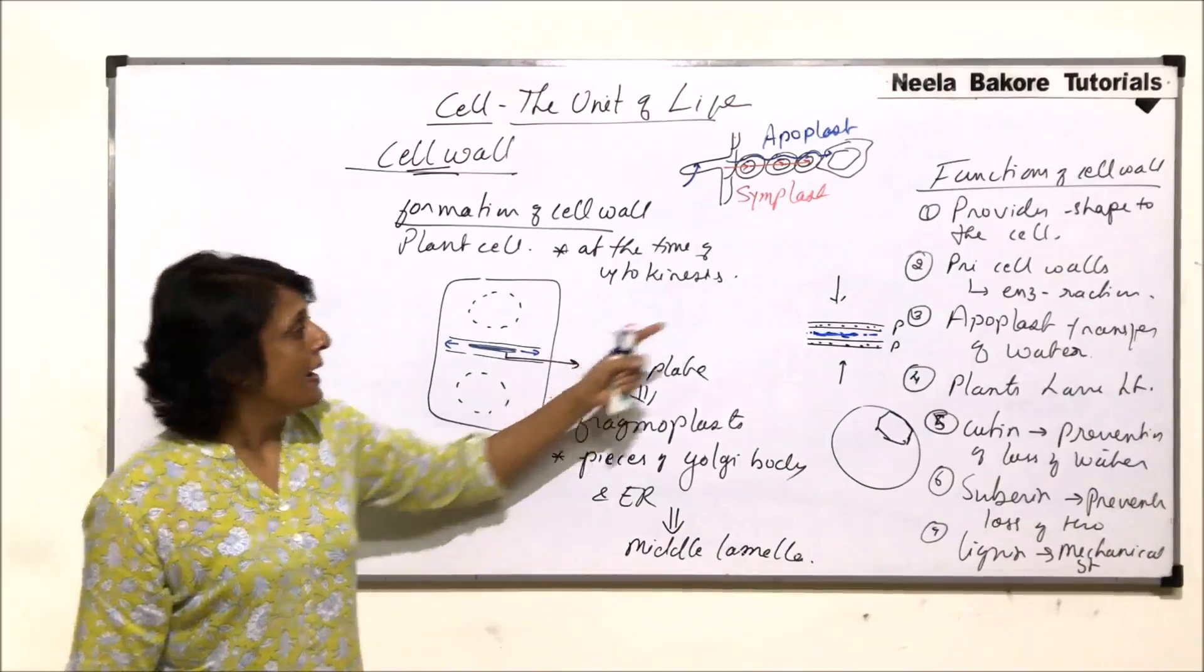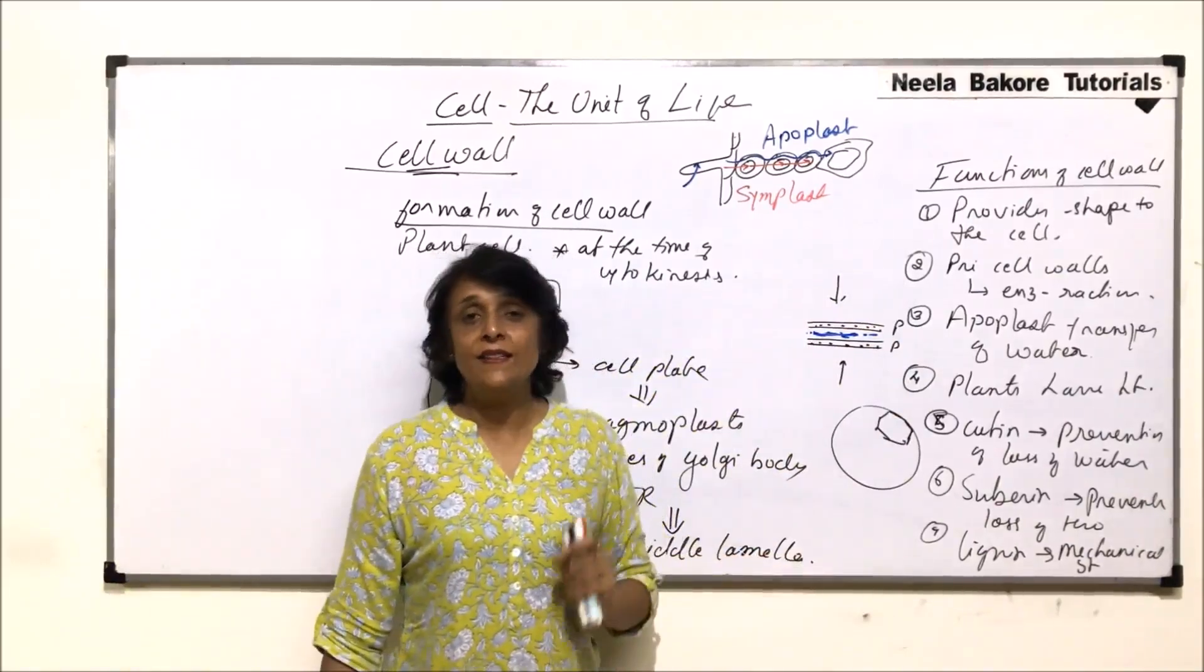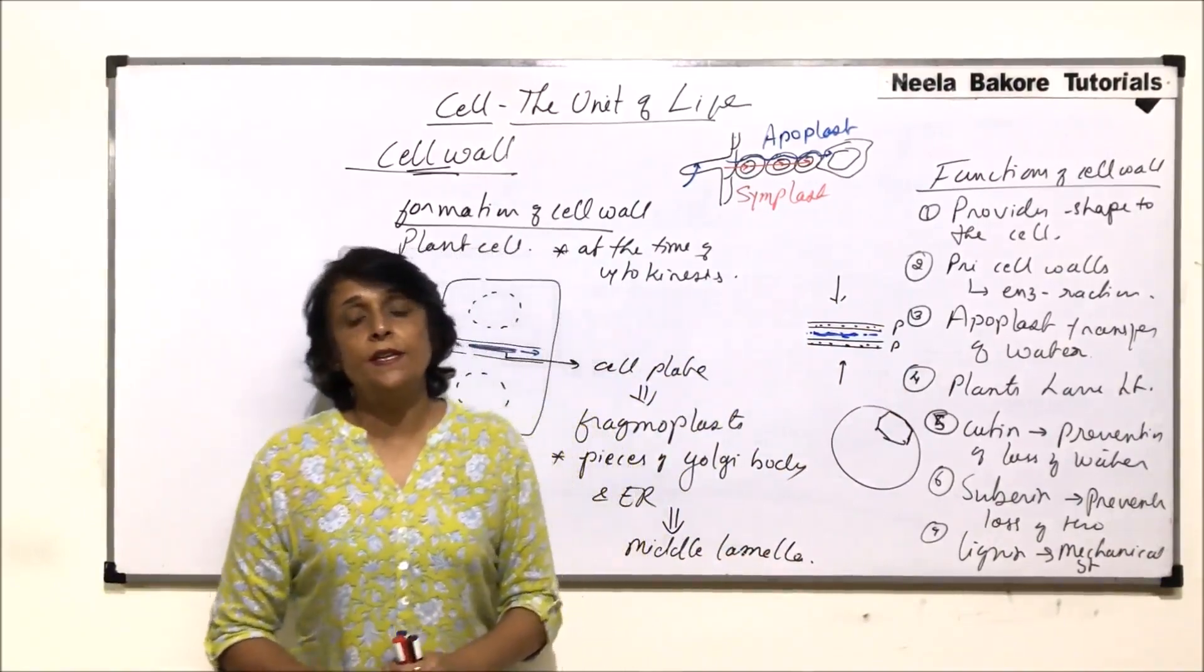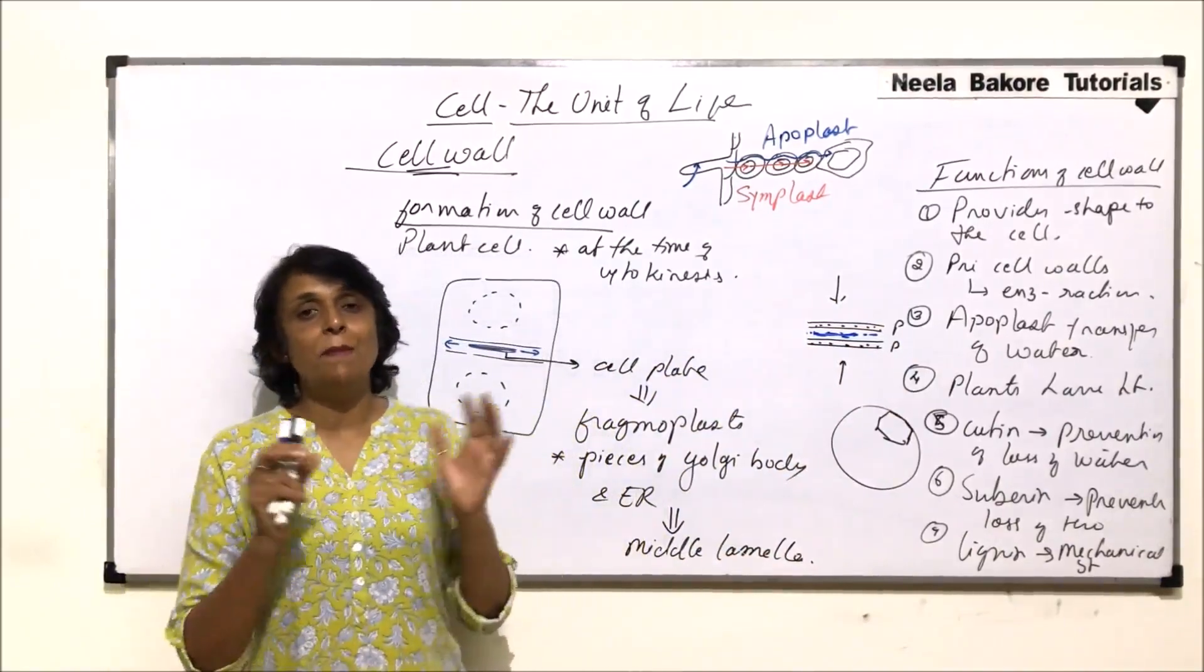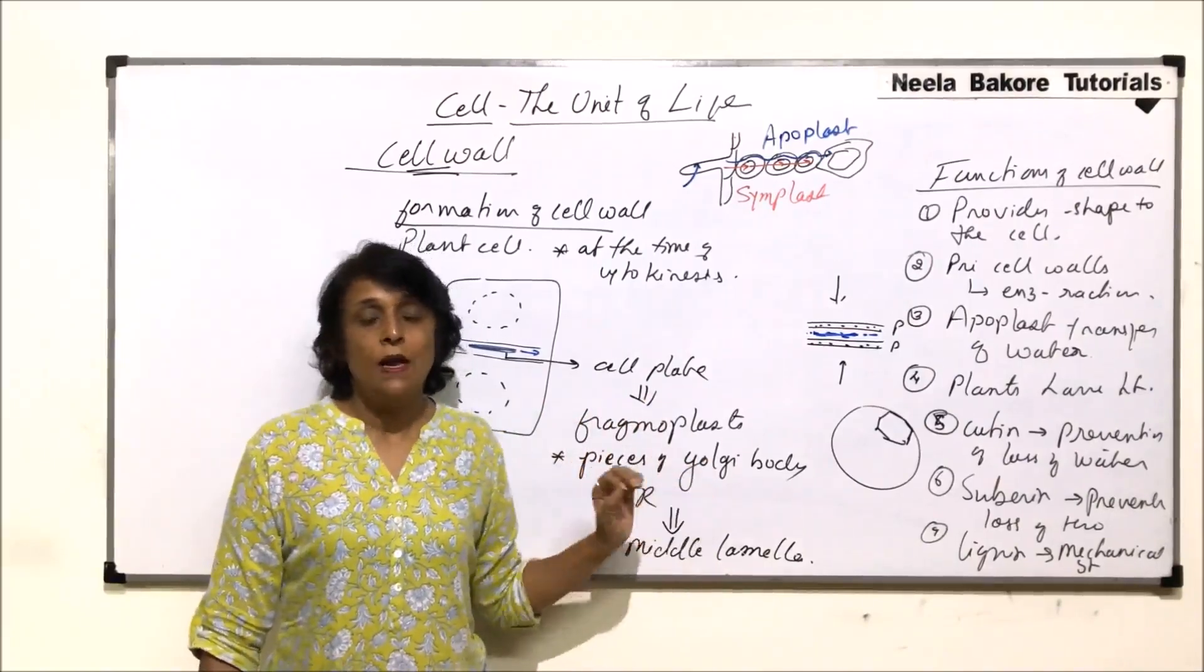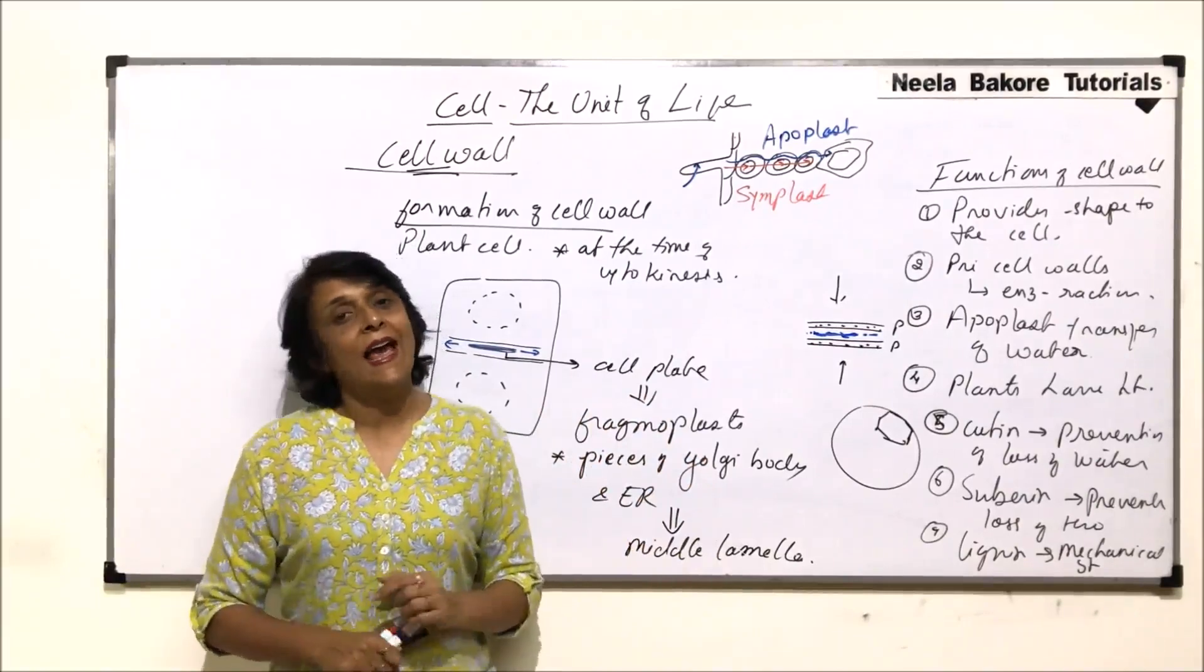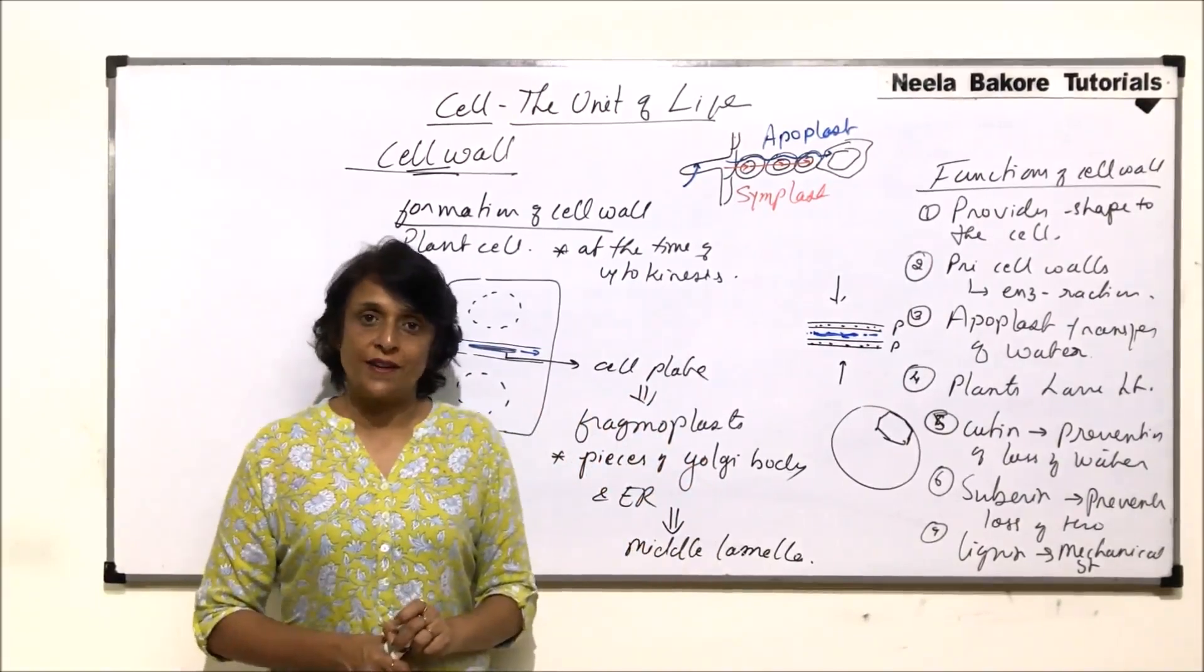And these are the functions which are performed by the cell wall. So with this we have completed the membrane part, plasma membrane also, and the layer which is outside, that is cell wall. Now in the next part we will try to go inside the cell and see what all structures are there.